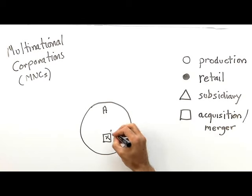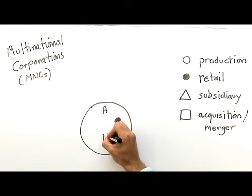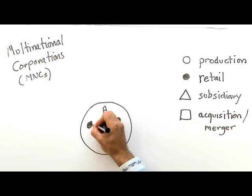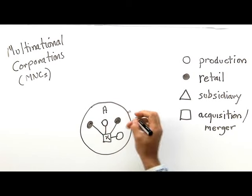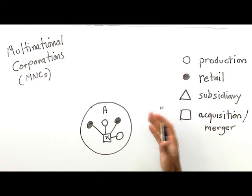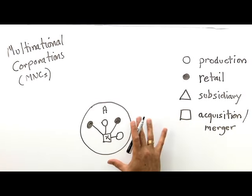to have retail outlets in State A, and to have production facilities as well in State A. Many companies stay this way for their entire existence. They always operate within their home country.